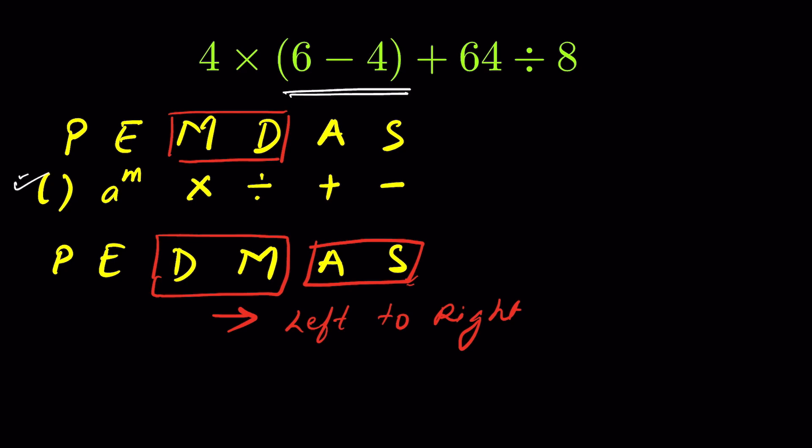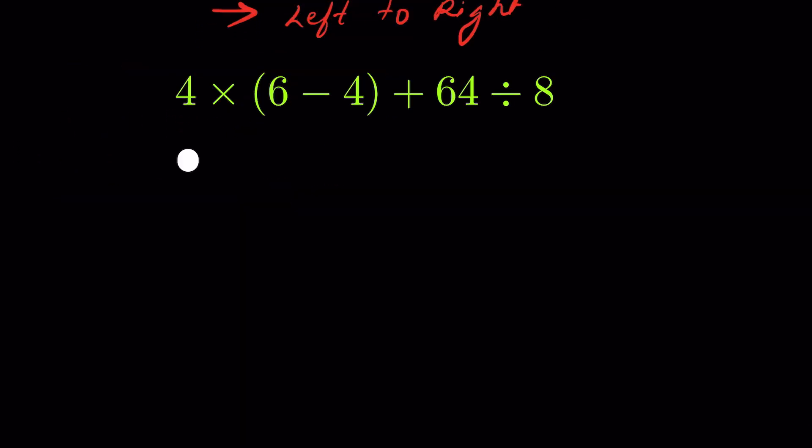So we will solve this parenthesis first. We have 4 multiplied by (6 minus 4 is 2). Now you write 2, then plus 64 divided by 8. From left to right there is multiplication and then we have addition and division. So 4 times 2 is 8, plus 64 divided by 8.